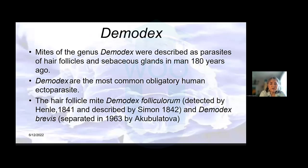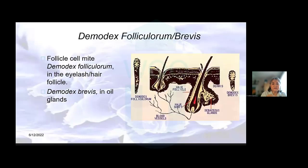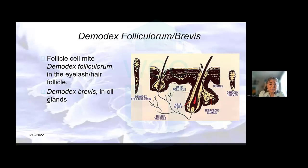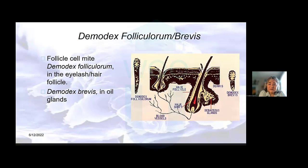There are two that we are particularly interested in: demodex folliculorum, which is the longer of the mites, and demodex brevis, which is its cousin and smaller. Folliculorum tend to nestle in hair follicles — that's the eyelashes or hair anywhere on the body, armpits, pubis, in the ears — and brevis tend to reside in sebaceous and/or oil glands, which would be the oil glands that service the hair, the skin, or of course meibomian glands.